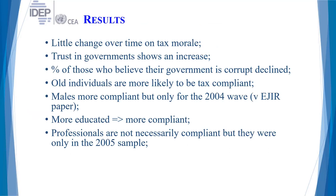In terms of results: over the four-year window, there is little change over time on tax morale — tax compliance didn't change in any direction in any meaningful way. But if you trust your government, tax compliance has a positive tendency — there is a positive correlation between tax compliance and trust in government. The percentage of those who believe their government is corrupt declined in the data. Older individuals are more likely to be tax compliant, consistent with international evidence. Males are more compliant only for the 2004 wave, but in the other two waves they are not compliant.